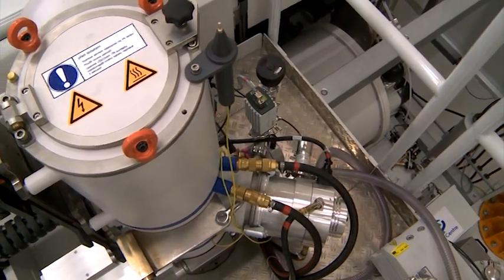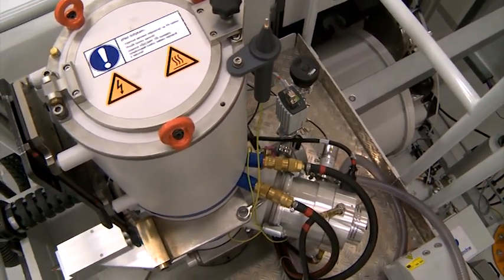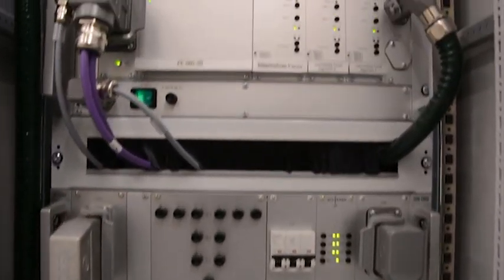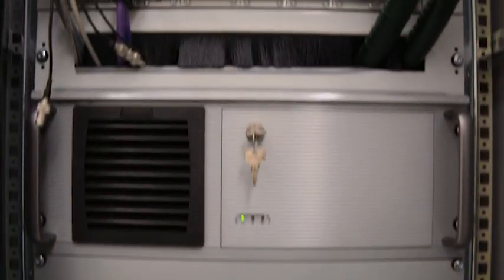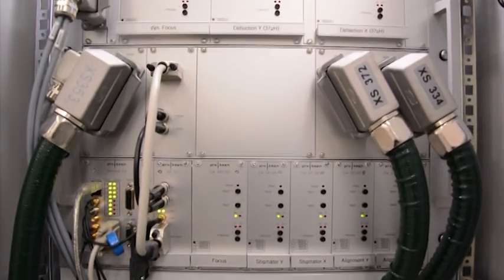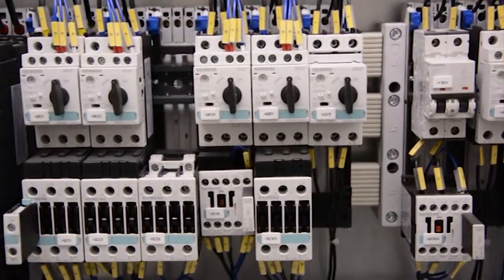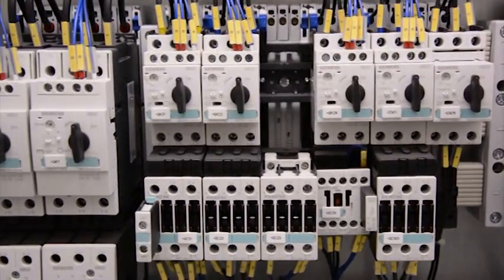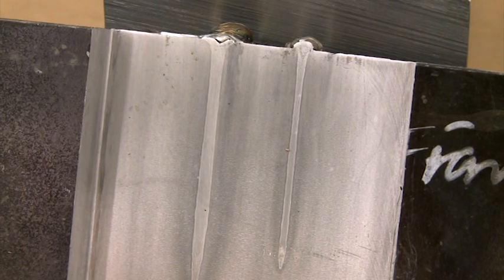Jako zdroj paprsku nám slouží elektronové dělo, které je napájeno vysokonapěťovým generátorem o napětí 60 až 150 000 V s maximálním výkonem 15 000 W. Paprsek o takovémto výkonu je schopen snadno proniknout i více než 10 cm ocely.